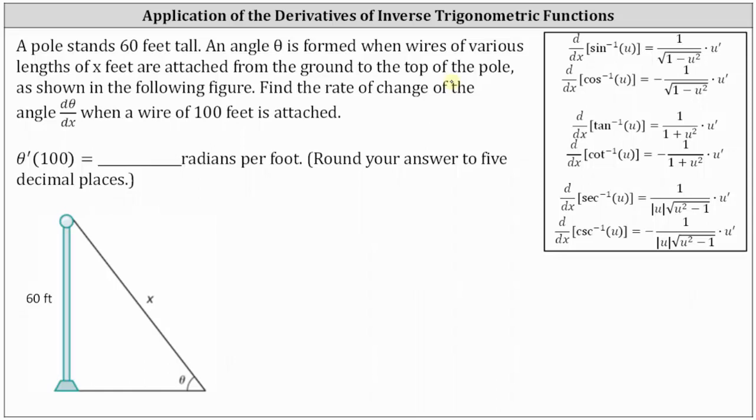We're asked to find the rate of change of the angle theta, which is dθ/dx, when a wire of 100 feet is attached. Notice how we do have a right triangle here, where in relation to the angle theta, the pole height is the opposite side, and the wire length is the hypotenuse, and therefore sin(θ) equals 60 divided by x.